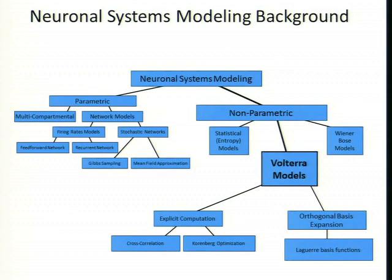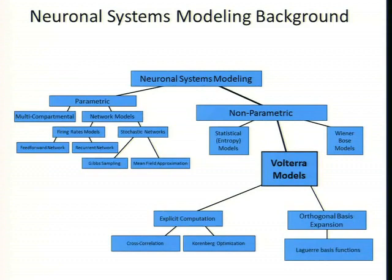We can split our models into parametric and non-parametric. Parametric means we have specific hypotheses about the system we're modeling, formulated as multi-compartmental models composed of differential equations — models such as Hodgkin-Huxley or network model formulations and firing rate models. Non-parametric models are black-box approaches where we try to have as few assumptions as possible about the system, including non-parametric statistical entropy models, Wiener models, and Volterra models, which is what I'll discuss today.